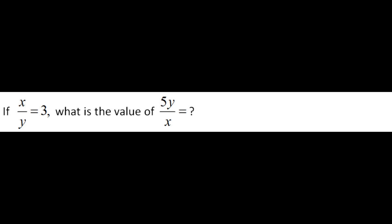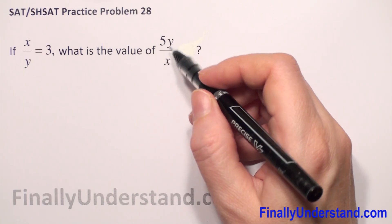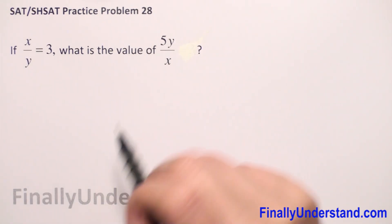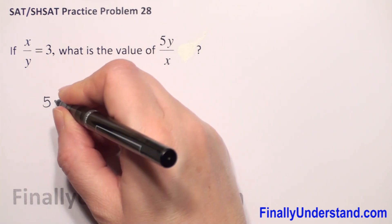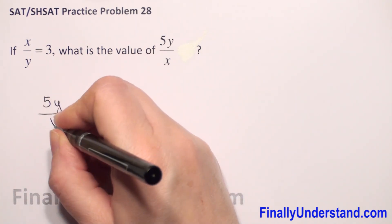If x over y is equal to 3, what is the value of 5 times y over x? So let me copy what we have to find. We have to find 5y over x.